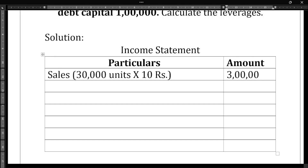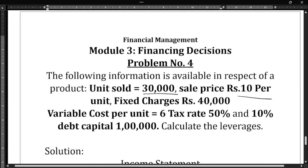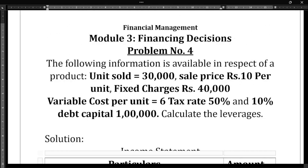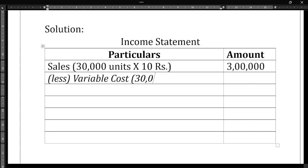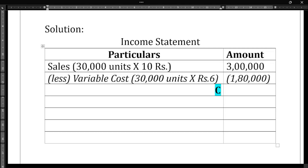From sales we will deduct variable cost. Variable cost is ₹6 per unit, and total units are 30,000. So 30,000 × ₹6 = ₹1,80,000. This is the variable cost.